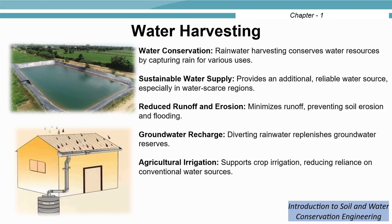We can use various rainwater harvesting methods to conserve water. We may construct a pond, a roof rainwater harvesting system, or bunds to promote infiltration and improve groundwater recharge. These measures conserve water resources by capturing rain for various uses, providing an additional reliable water source especially in regions facing water scarcity. It helps minimize runoff, prevent soil erosion and flooding, and promotes groundwater replenishment. Harvested water can be used for crop irrigation, reducing dependence on conventional water sources.